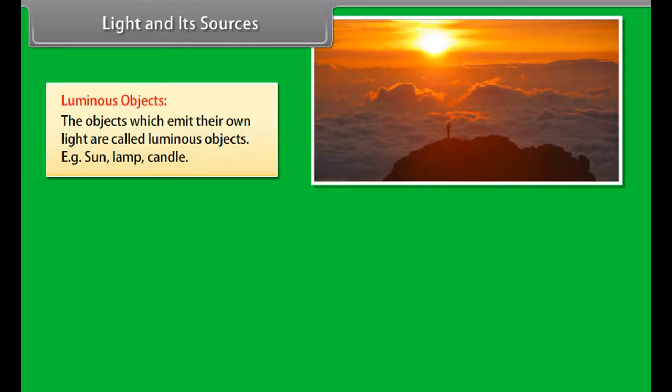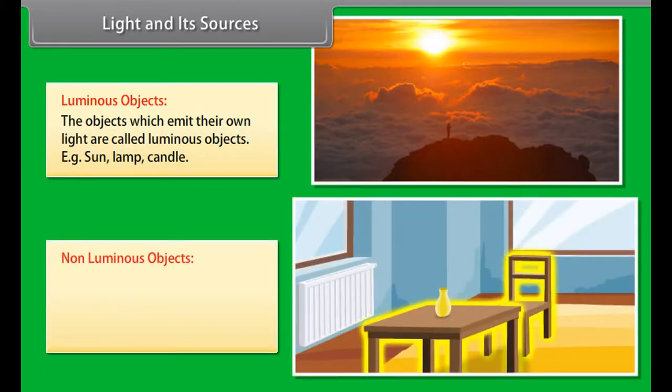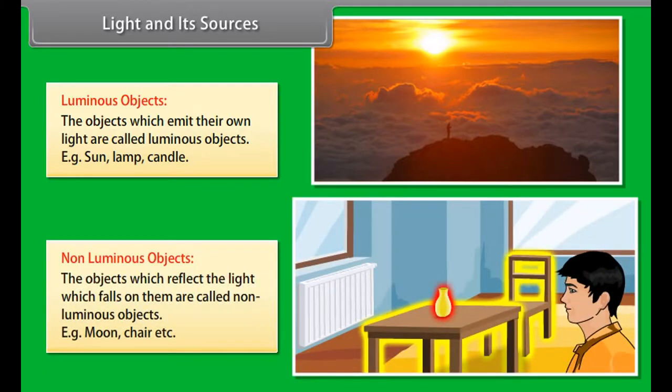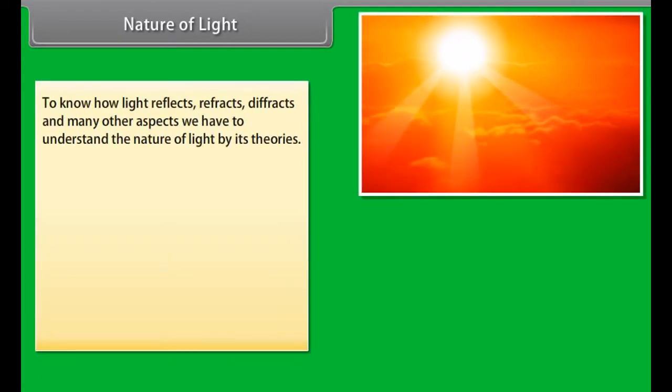Luminous objects: The objects which emit their own light are called luminous objects. Example: Sun, lamp, candle. Non-luminous objects: The objects which reflect the light which falls on them are called non-luminous objects. Example: moon, chair, etc.